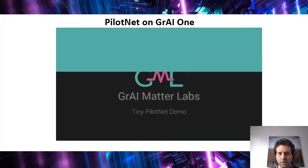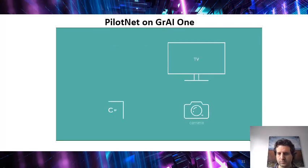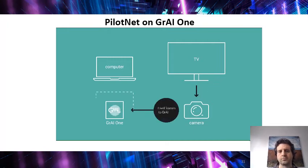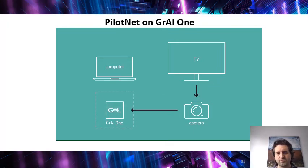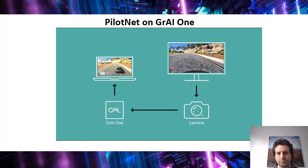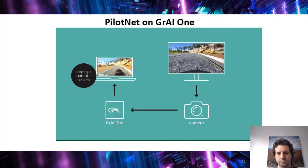We have created an autonomous navigation scenario using a gaming engine. A camera observes a road in real time and feeds its frames to Gray One. Gray One processes the input scene using a neural network called PilotNet and updates the steering angle for a car. This information is received by the gaming engine and the steering is updated in real time.